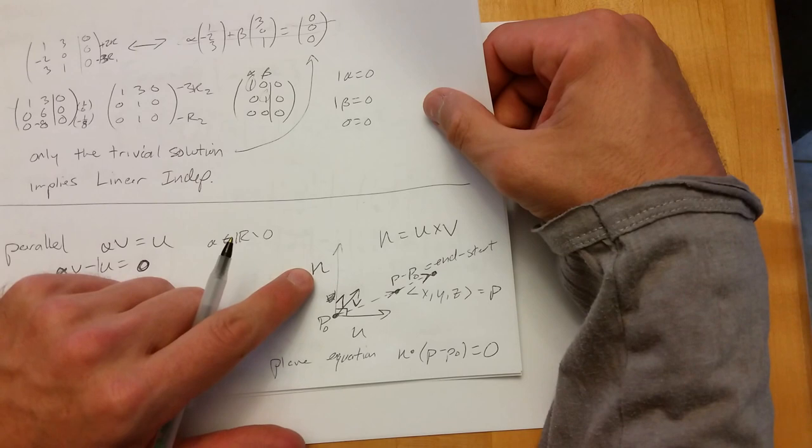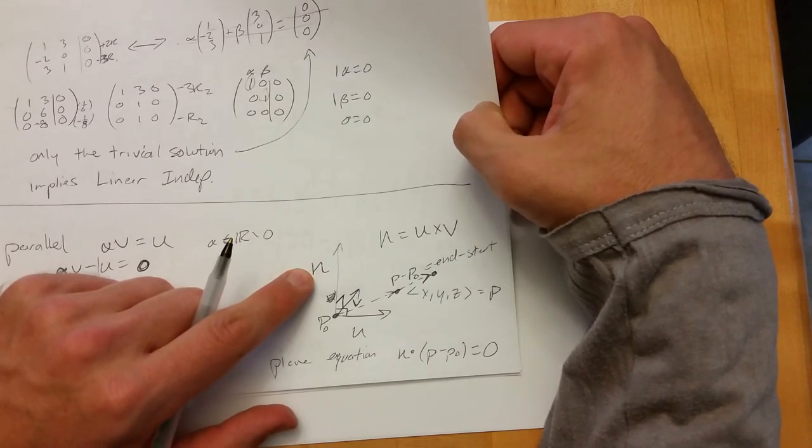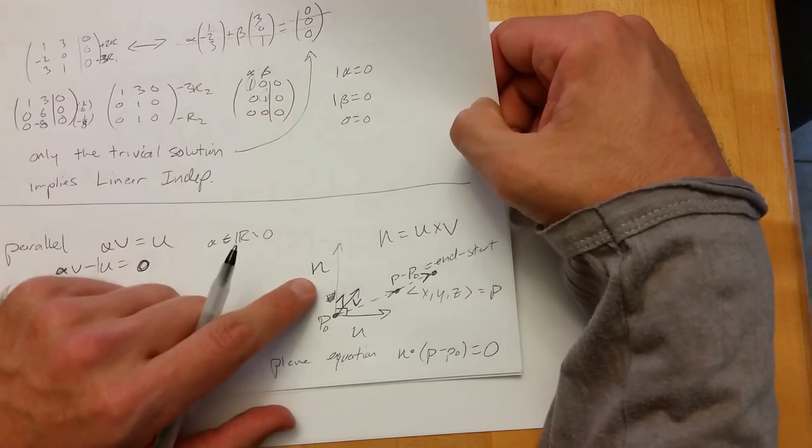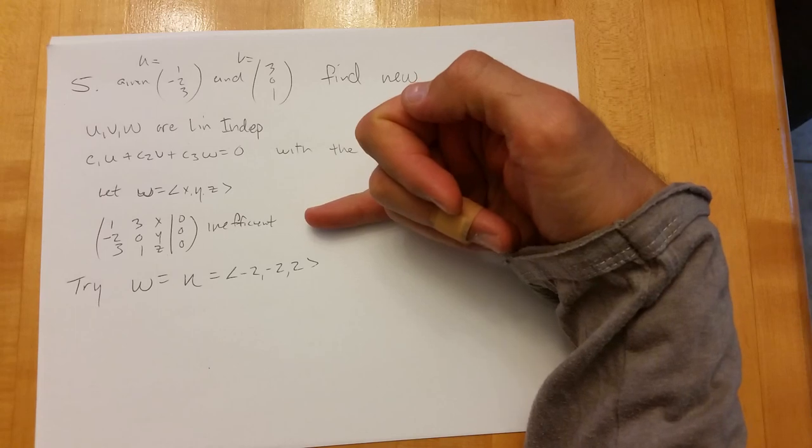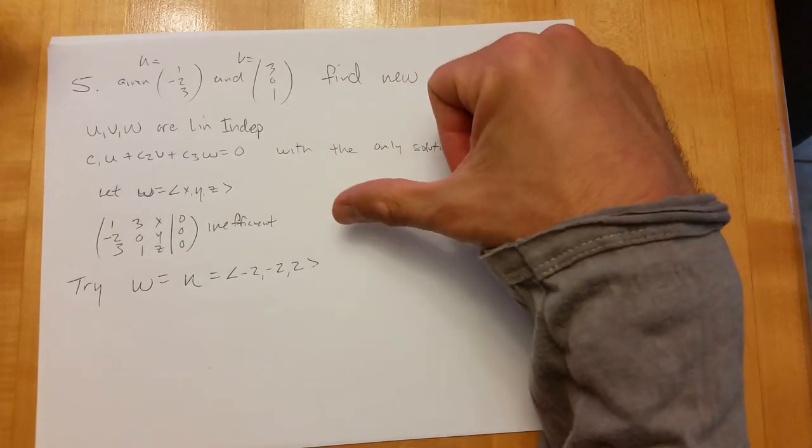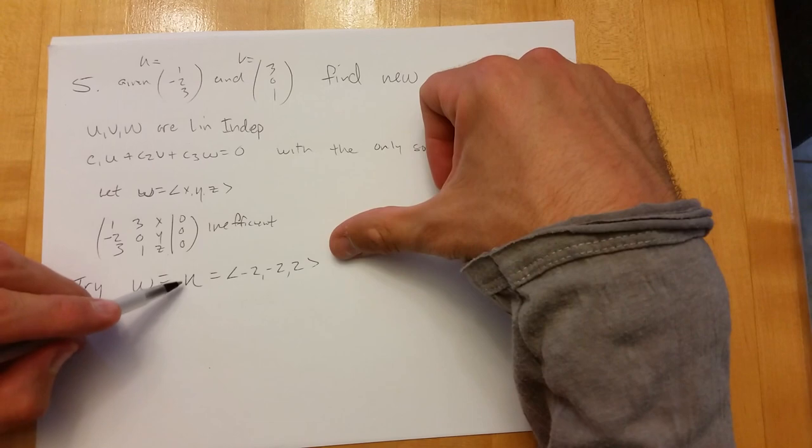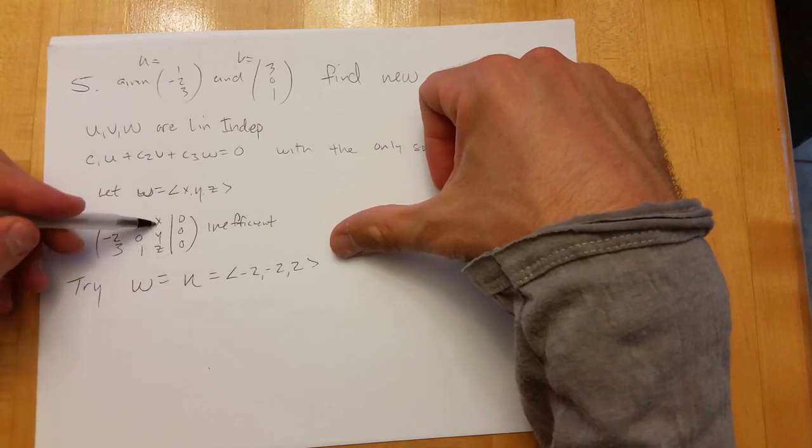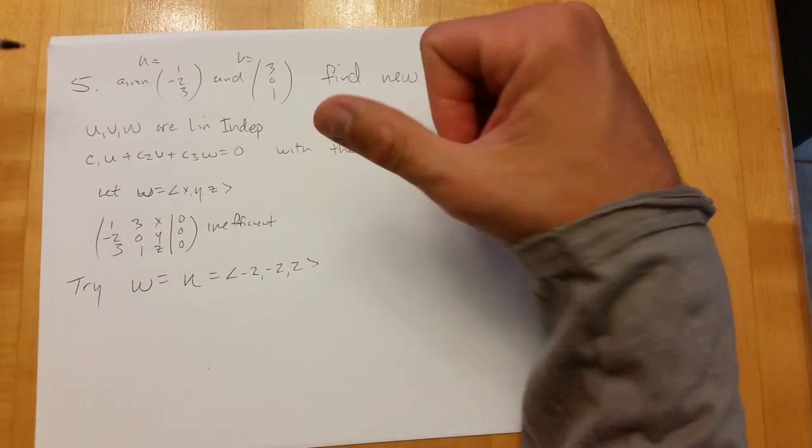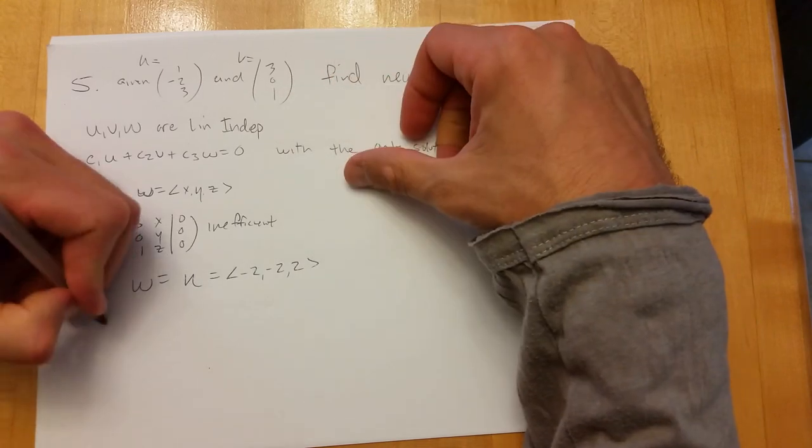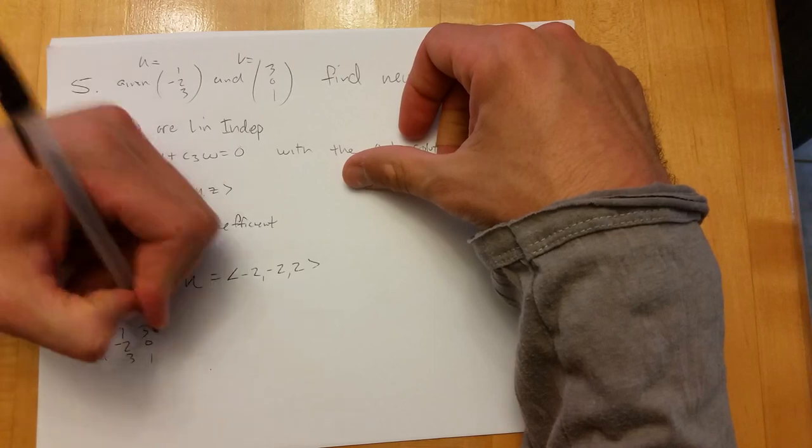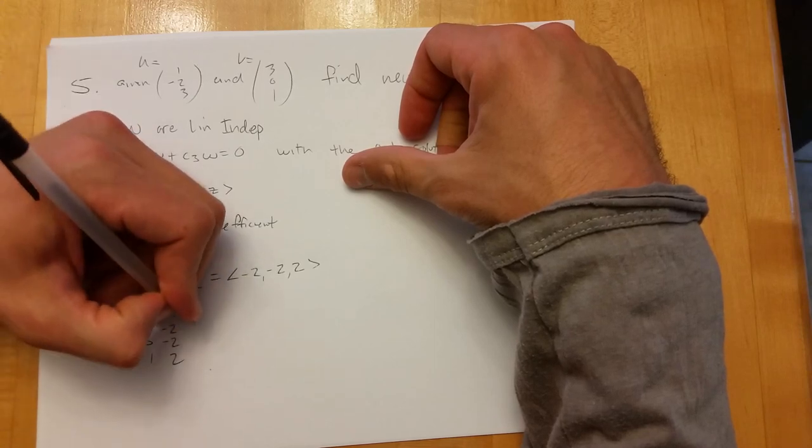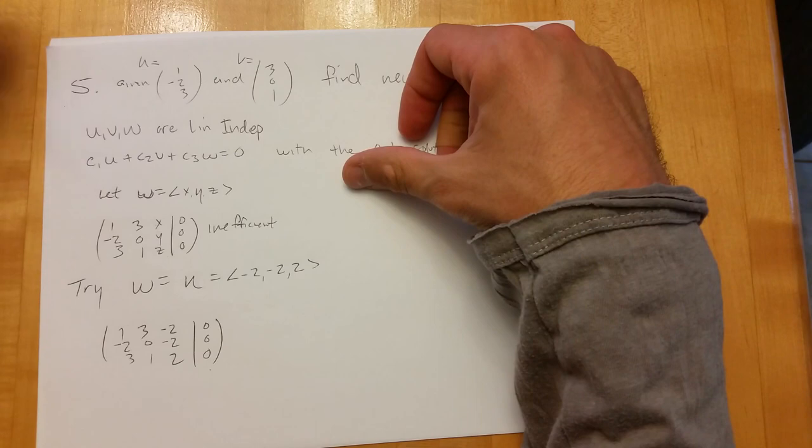Now if we were in four dimensions this would be a much tougher problem because we don't have the amazing cross product in four dimensions. We'd pretty much be working here and guessing and checking. So when I say try w as the normal, I'm going to put negative two, negative two, two in here and see what solution do we get.